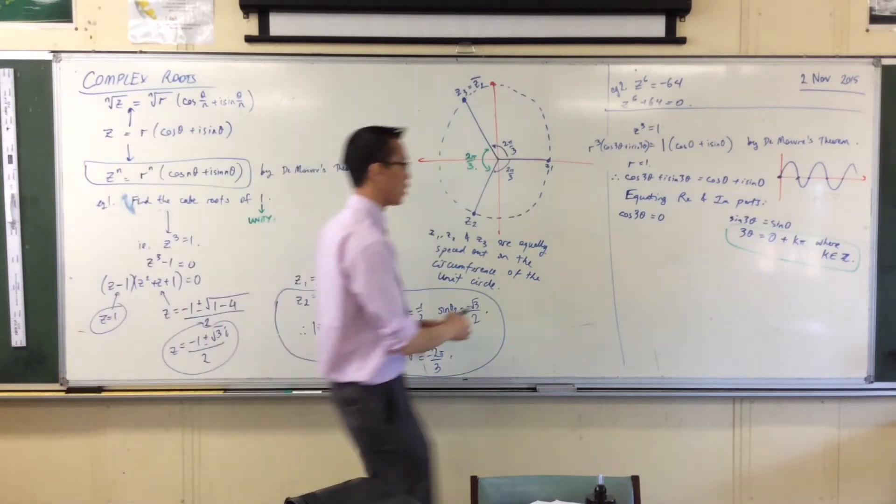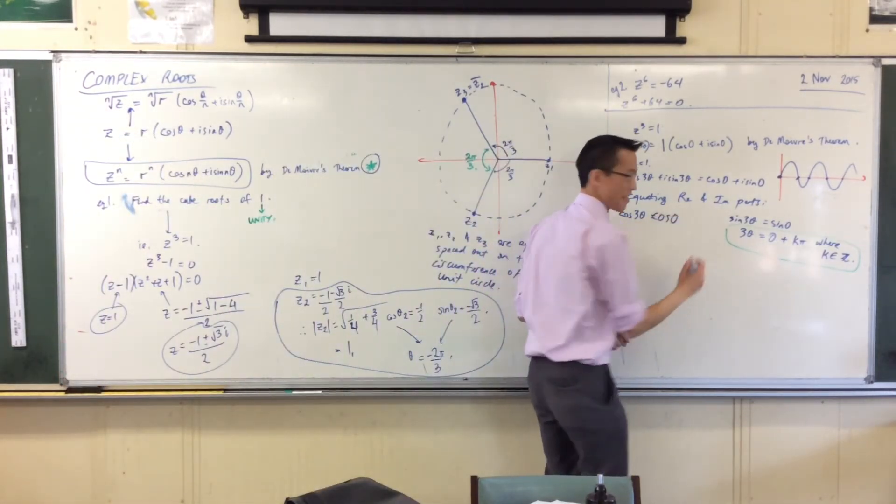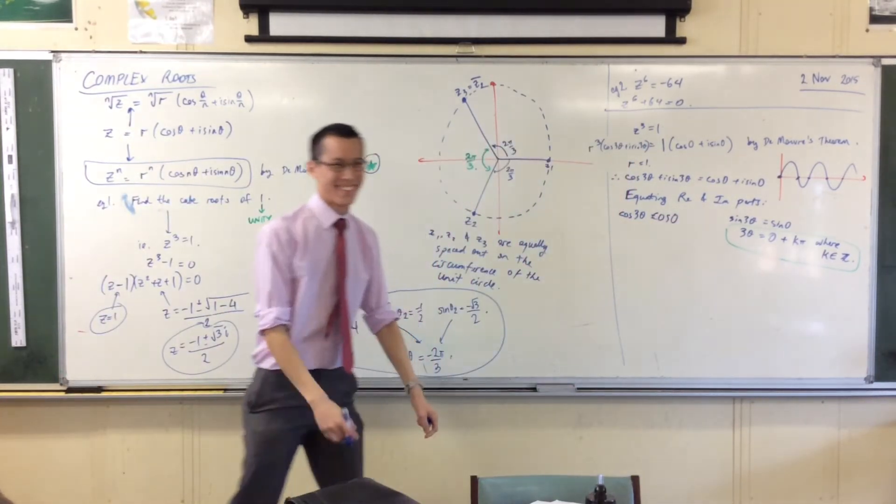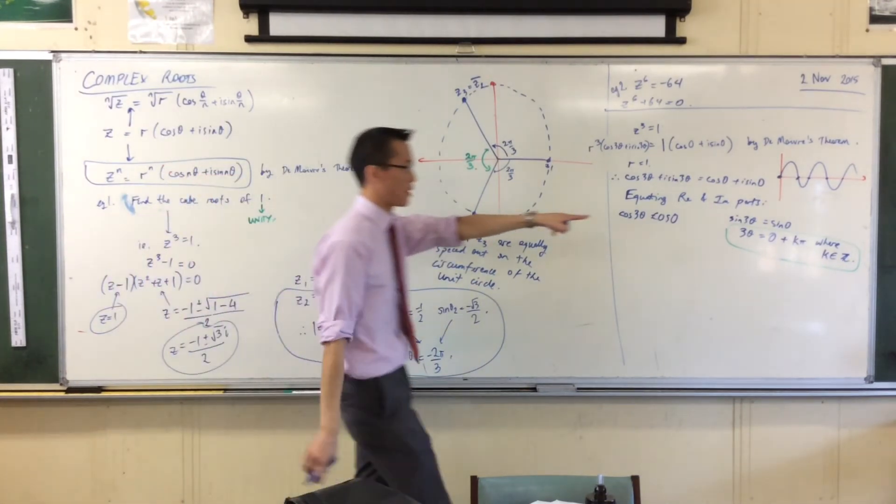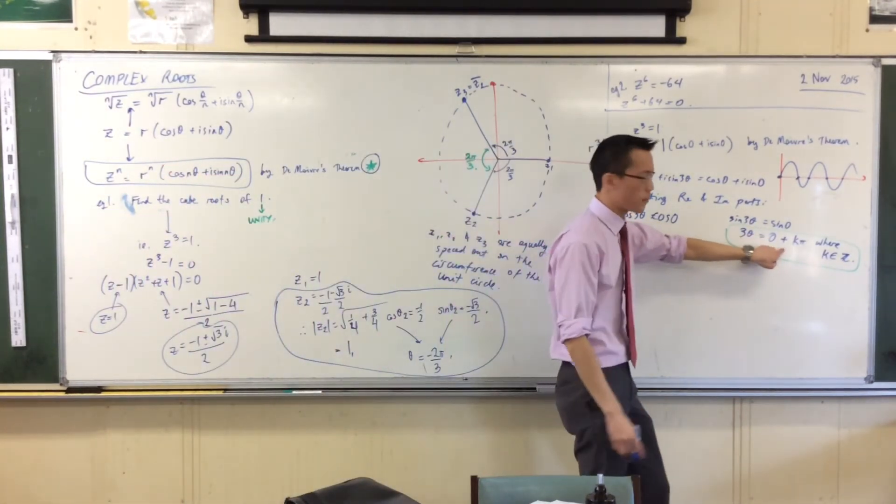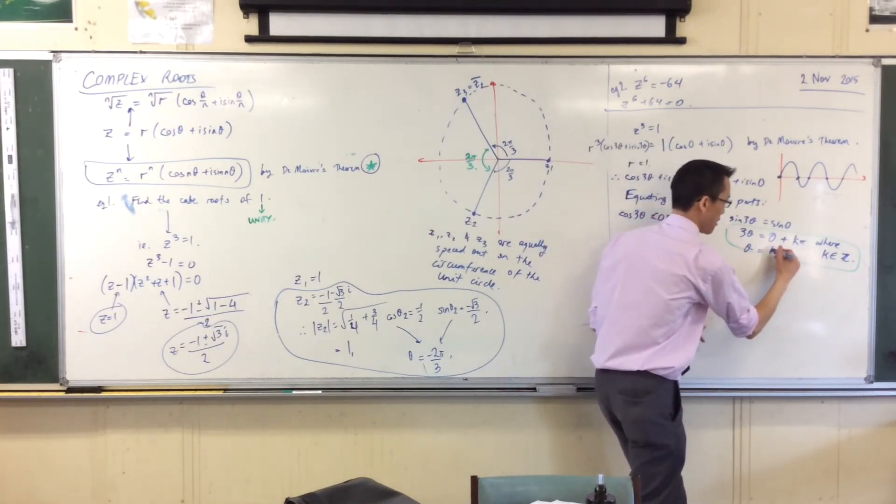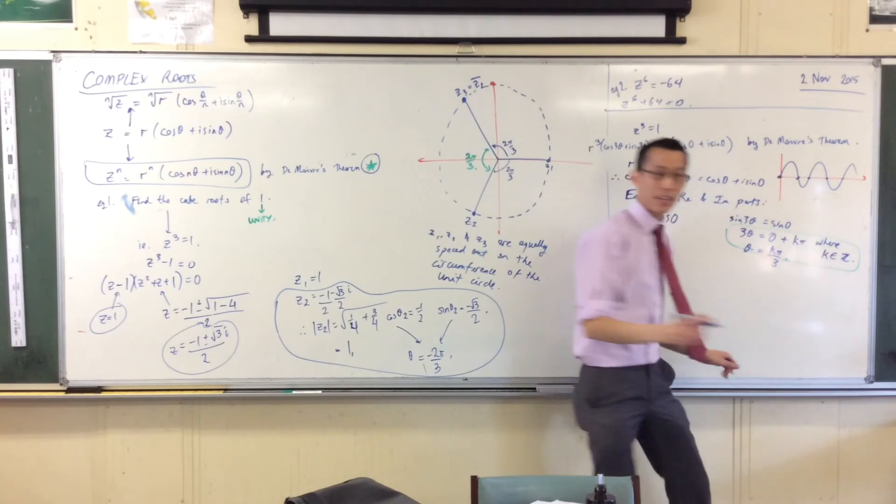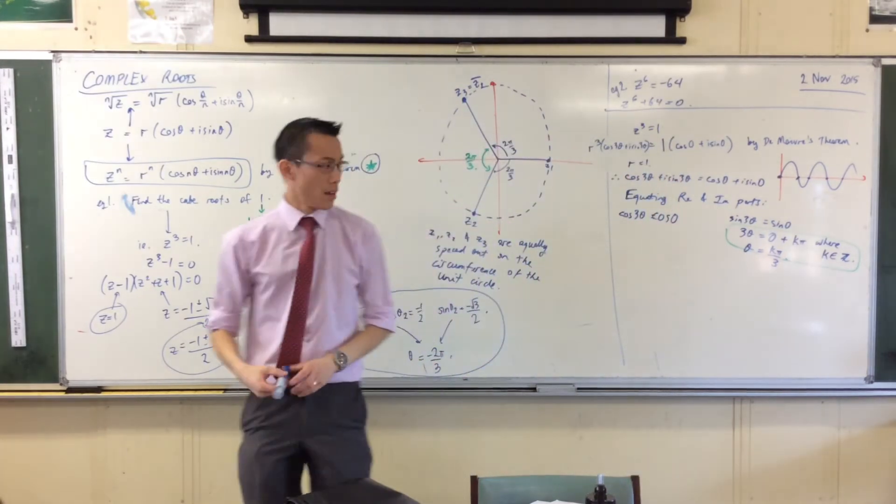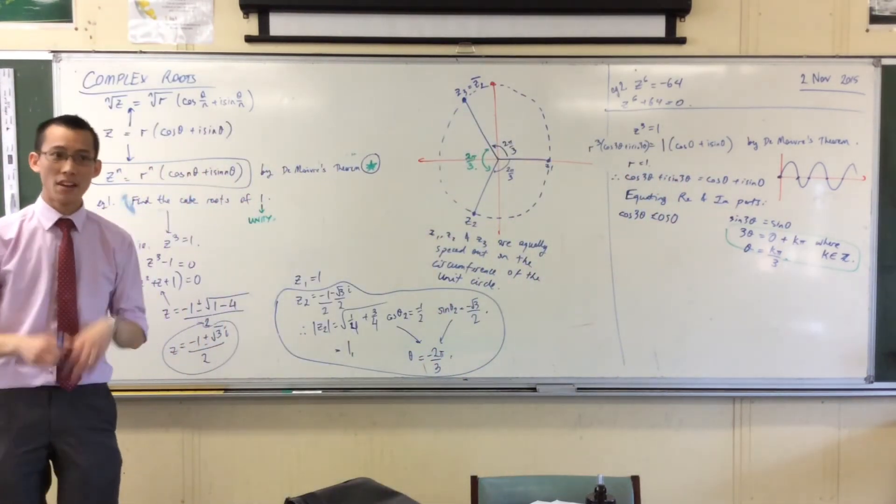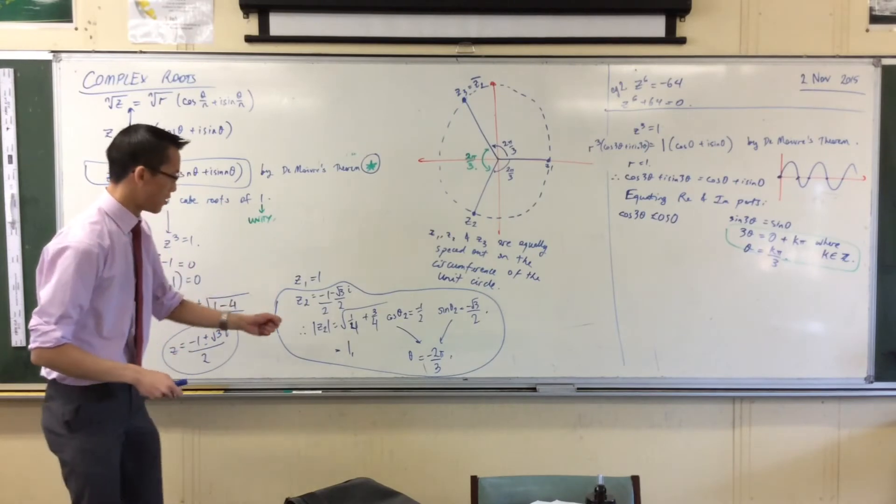Now let me finish off what's happening here on the right-hand side. Zero plus k·π is just k·π, so I'll divide through and that gives me θ = k·π/3.